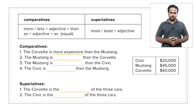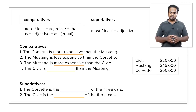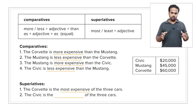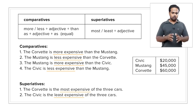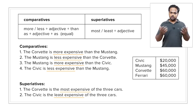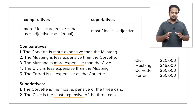All right, let's look at the answers. The Corvette is more expensive than the Mustang, so that means the Mustang is less expensive than the Corvette. But the Mustang is more expensive than the Honda Civic, so the Civic is less expensive than the Mustang. The Corvette is the most expensive of the three cars, and the Civic is the least expensive. We could also use 'as plus adjective plus as' — for example, if the Ferrari is also $60,000, we can say the Ferrari is as expensive as the Corvette.